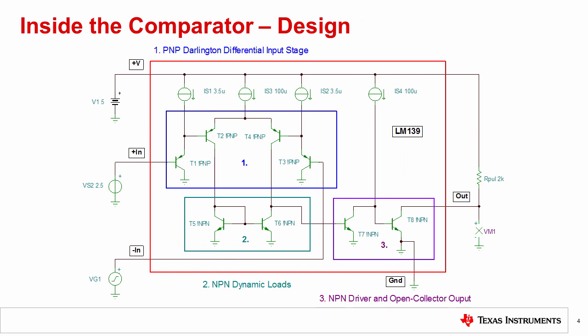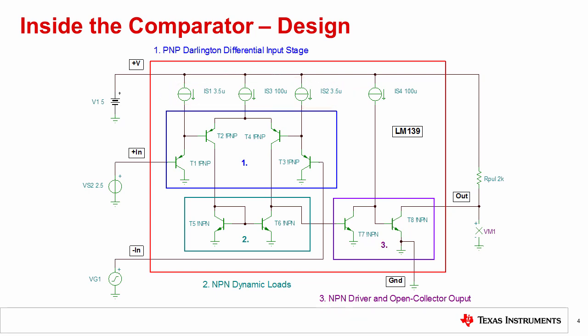Let's take a look at the simplified internal design of a bipolar comparator, the LM139. The objective here is not to teach transistor theory or the detailed workings of a comparator design, but rather to give you a general idea of how a comparator works. The input stage, outlined in the blue box, is comprised of a PNP differential amplifier. Each side of the differential stage uses Darlington PNP transistors, which increases the input impedance, lowers the input bias current, and allows the common mode input voltage to extend down to 0 volts. The collectors of the transistors in the differential input stage are connected to NPN transistors that act as a dynamic load, as shown outlined in turquoise. Finally, the output of the dynamic load stage is coupled to an NPN driver and open collector output stage, as shown outlined in purple.